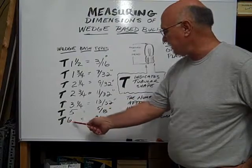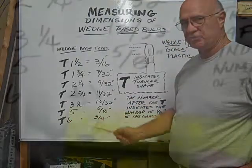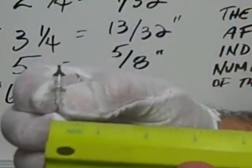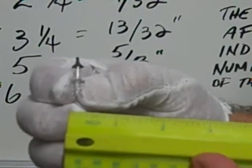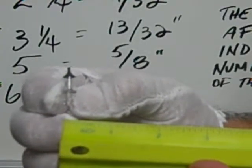A T six would be three quarters of an inch. This halogen bulb is T two and a quarter in diameter.